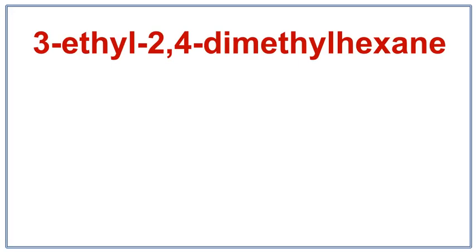Let's draw the structure for 3-ethyl-2,4-dimethylhexane. Hex right here tells us that there are 6 carbons present in the longest carbon chain.